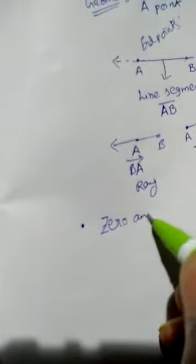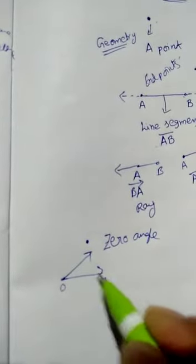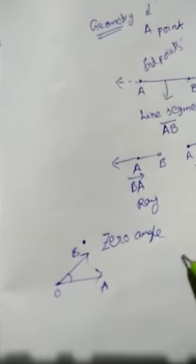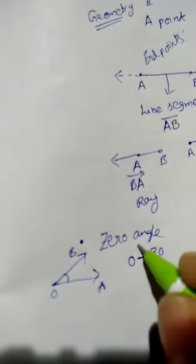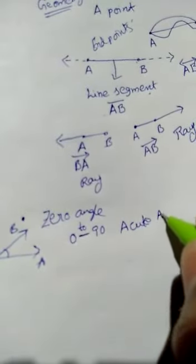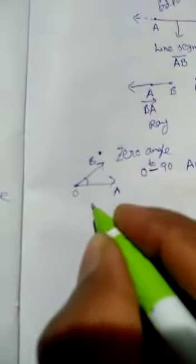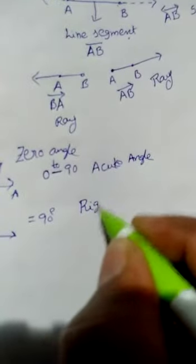Angles are basically divided into some types. When there is only one point with no separation, there is no angle — that is called a zero angle. When the angle is more than zero and less than 90 degrees — that is between zero and 90 — such an angle is called an acute angle. When the angle is exactly 90 degrees, that is called a right angle.